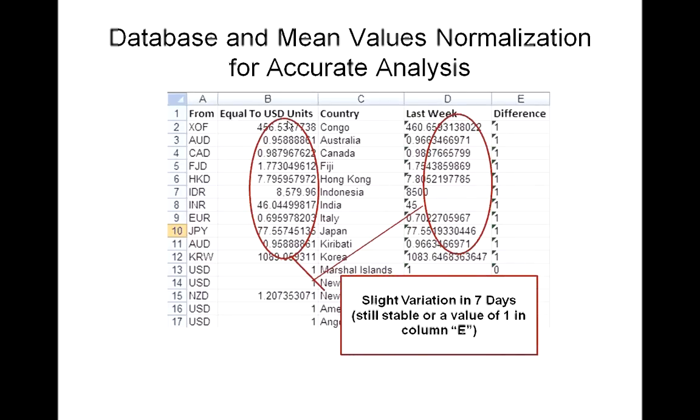In this case, currency conversion status relative to a U.S. dollar is our indicator. If weighted as a 1, it represents a slight variation throughout a single week analysis.